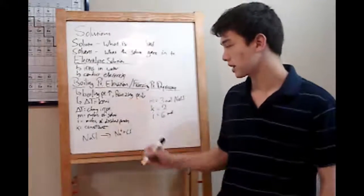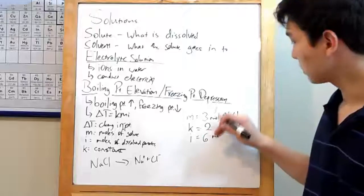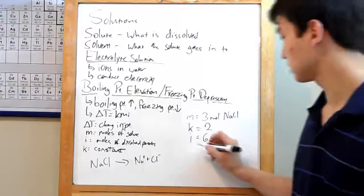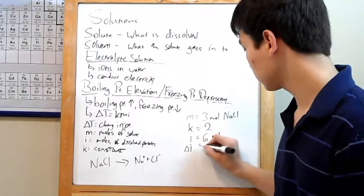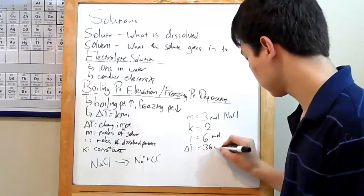KMI, that's just multiplication. So to solve this, 2 times 3 is 6, and 6 times 6 is 36. So your delta T is 36 degrees Celsius.